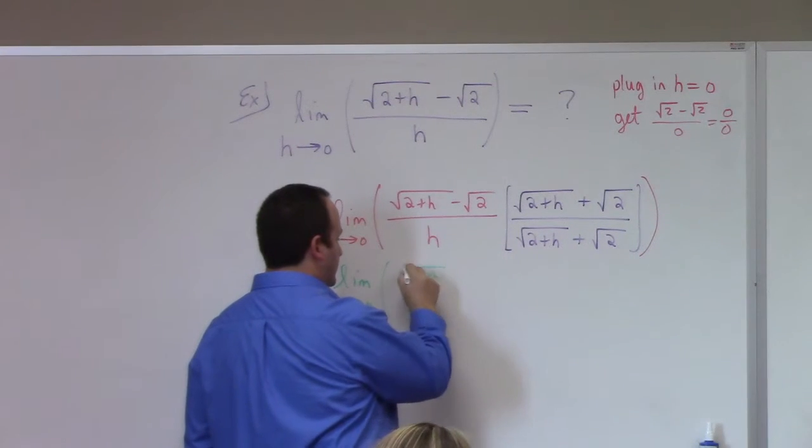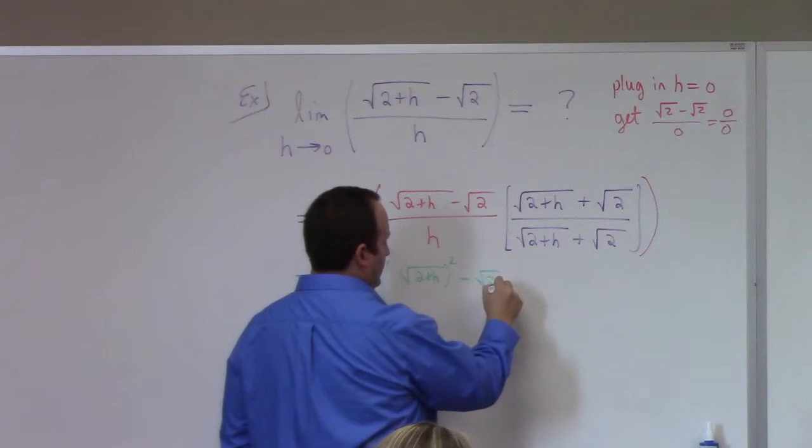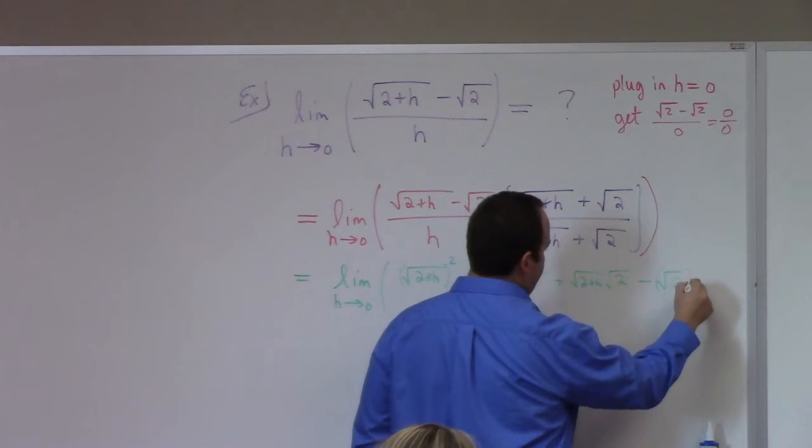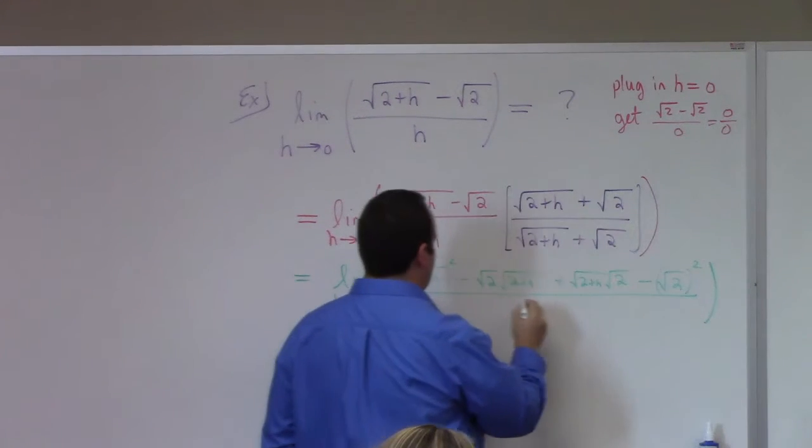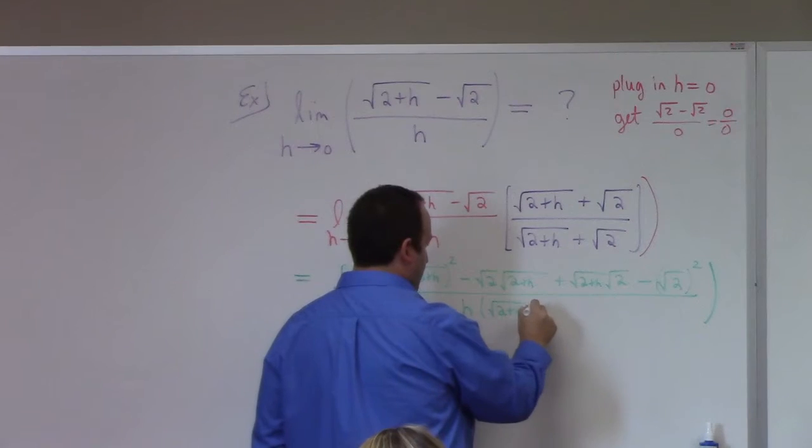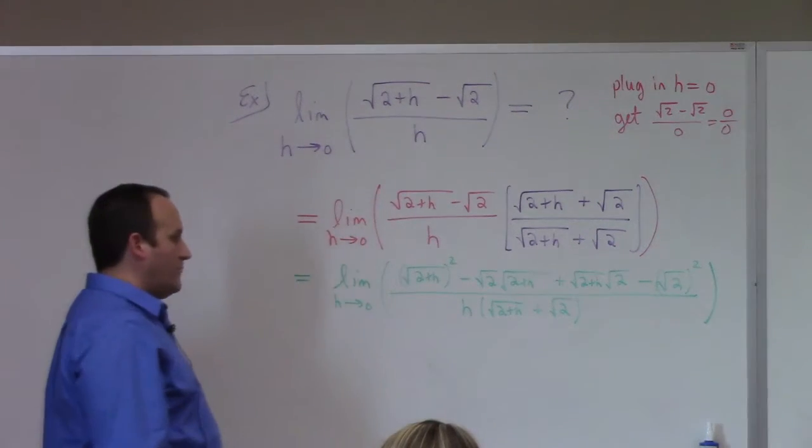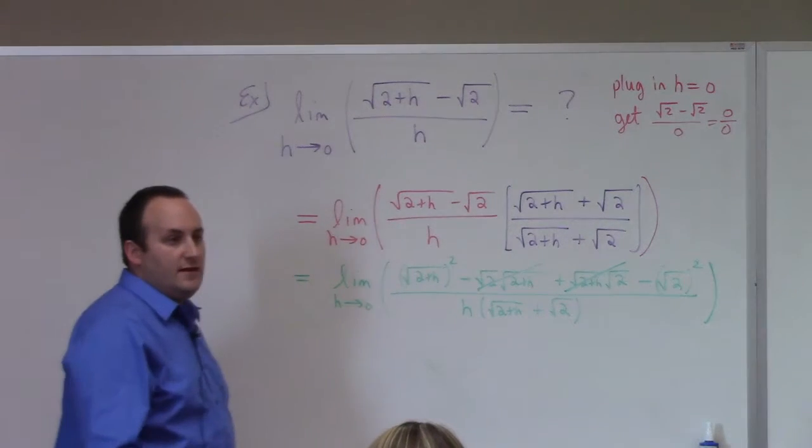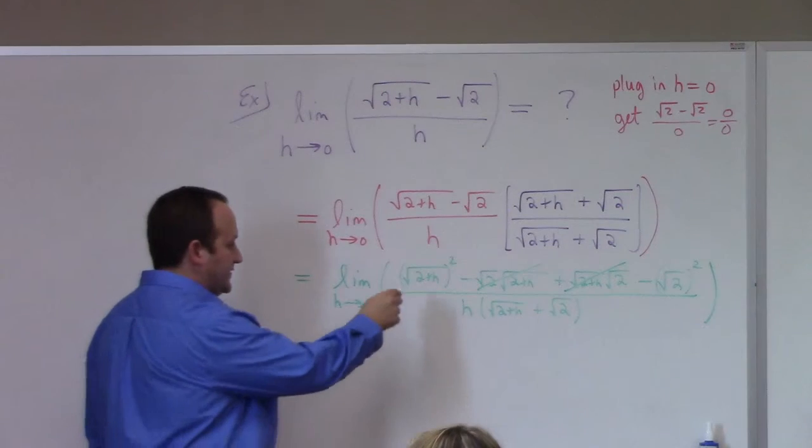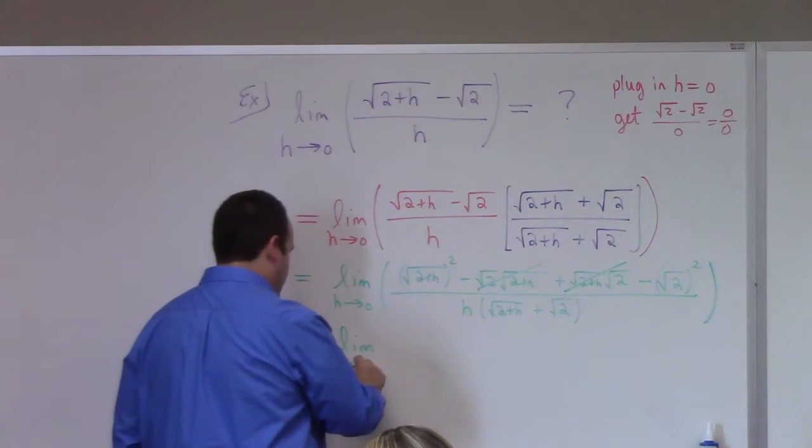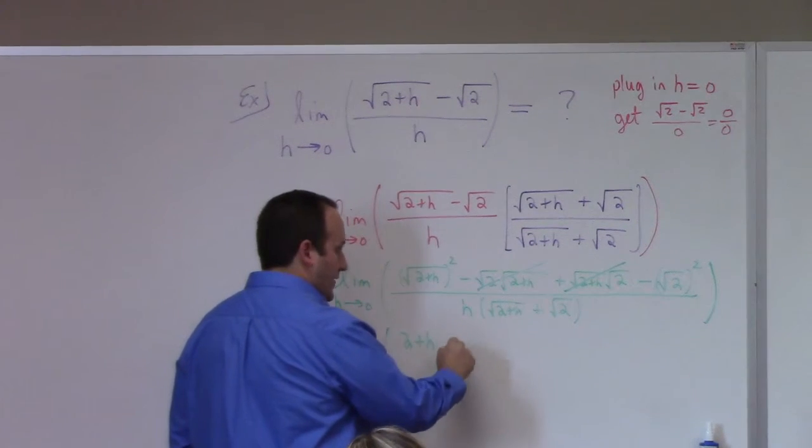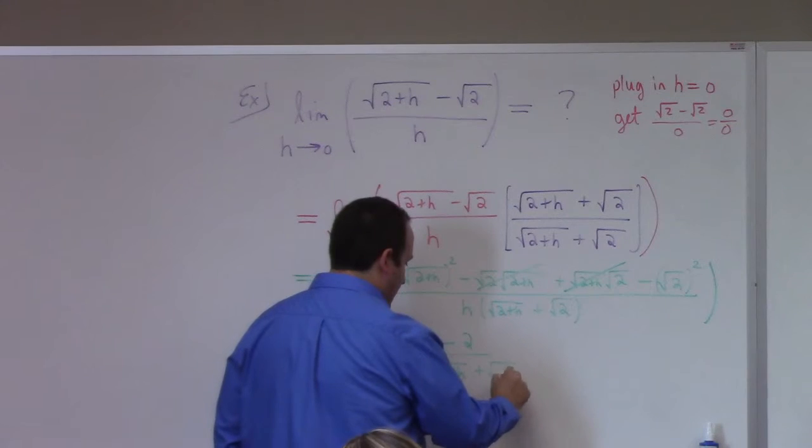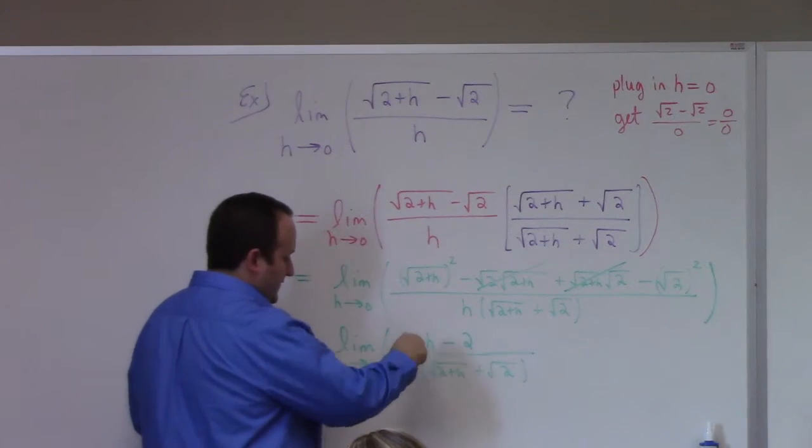Upstairs we've got square root of 2 plus h quantity squared and then minus square root of 2 times square root of 2 plus h plus square root of 2 plus h, square root of 2 minus square root of 2 quantity squared, all divided by h times square root of 2 plus h plus square root of 2. Now the whole point of multiplying by the purple 1 is because these terms cancel. This gives us the limit as h goes to 0 of 2 plus h minus 2 divided by h times the square root of 2 plus h plus the square root of 2. These 2s cancel.